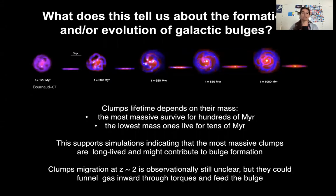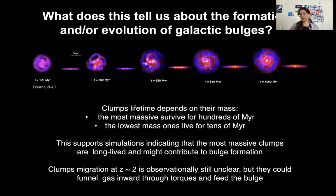To wrap up: clump lifetime depends on mass. The most massive clumps survive for hundreds of megayears, supporting simulations in which they are long-lived and contribute to bulge formation. The lowest-mass clumps are disrupted by feedback on shorter timescales. Clump migration at redshift 2 remains observationally unclear and debated, with more observations needed, while lower-redshift clumps do show signs of migration. In any case, clumps can funnel gas inward through torques and feed the bulge, making them a viable channel for bulge formation alongside other mechanisms such as mergers. Thank you.